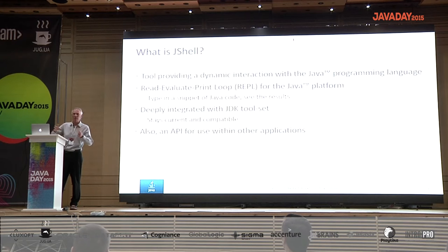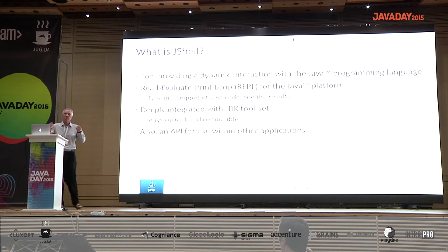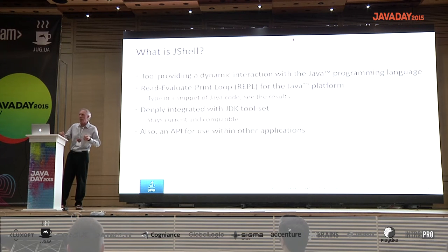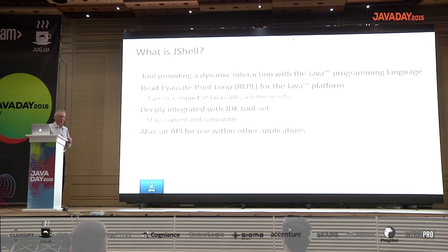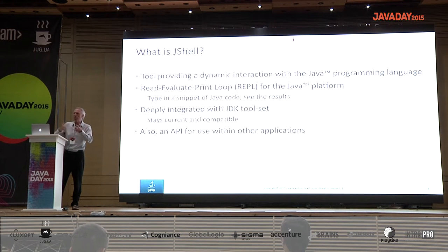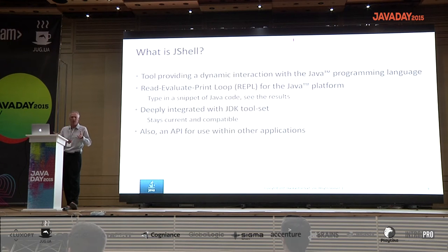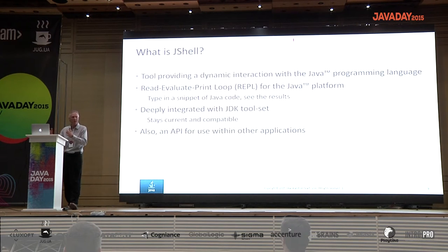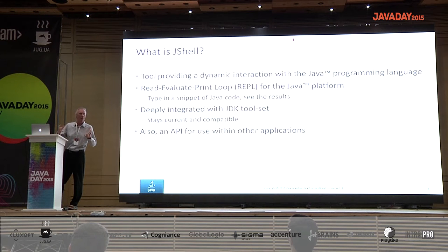JShell will be part of the Java platform. It is actually in early access of JDK 9, and significantly, it's deeply built on top of the platform, which means it's completely consistent with and will stay current with the platform. JShell is actually an architecture with an API that allows any tool to take the Java snippet evaluation mechanism and add it to your tool — whether it's your idea of what a REPL should look like, or integrating that functionality to control other tools.